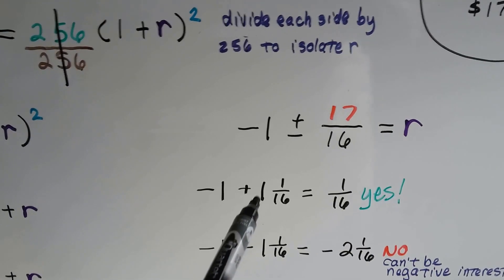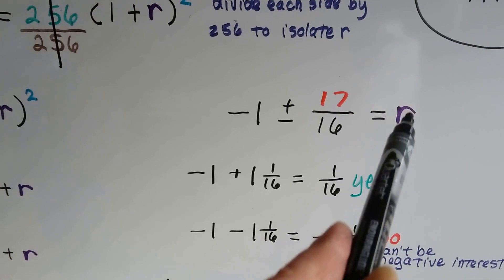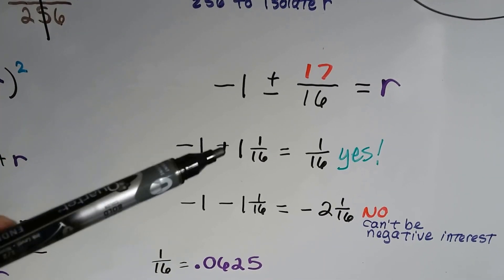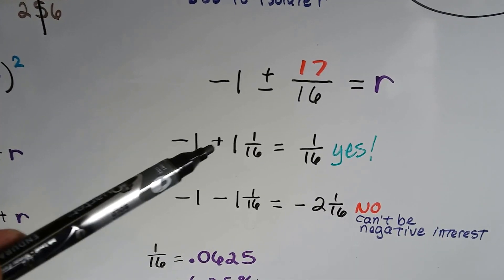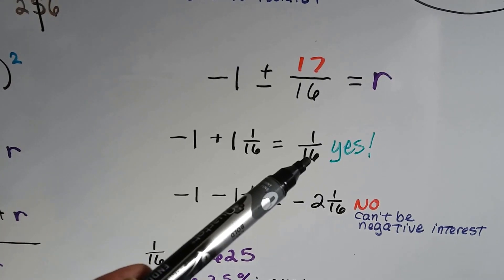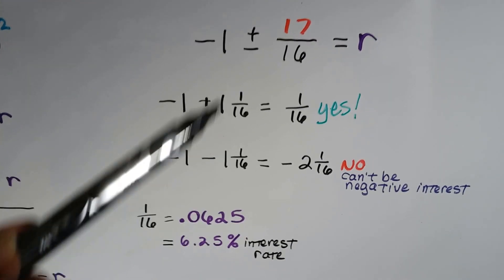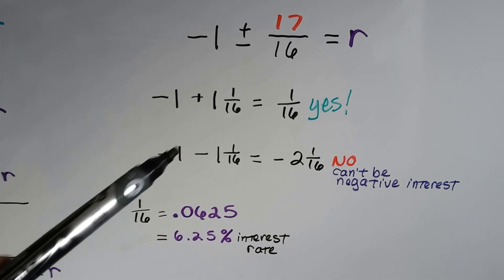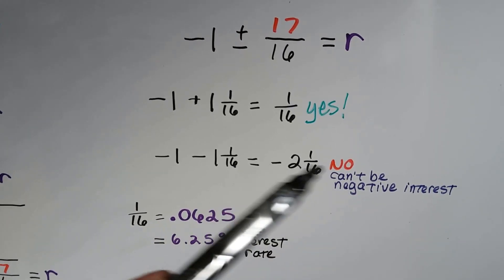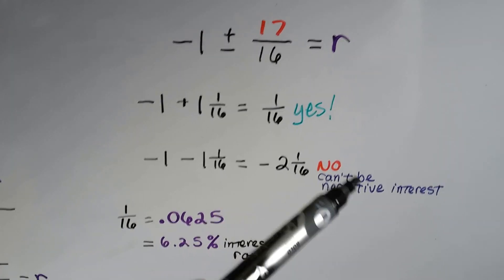We only need one of these. So we end up with negative 1 plus or minus 17 over 16. Well, that's just 1 and 1 sixteenth. That's going to be our interest rate. So negative 1 plus or minus. So if we do plus, this negative 1 is going to make a zero pair with this positive 1, and we're going to end up with 1 sixteenth. If we do minus, then negative 1 minus 1 and 1 sixteenth is a negative 2 and 1 sixteenth, and you can't have a negative interest rate, so this cannot be the answer.